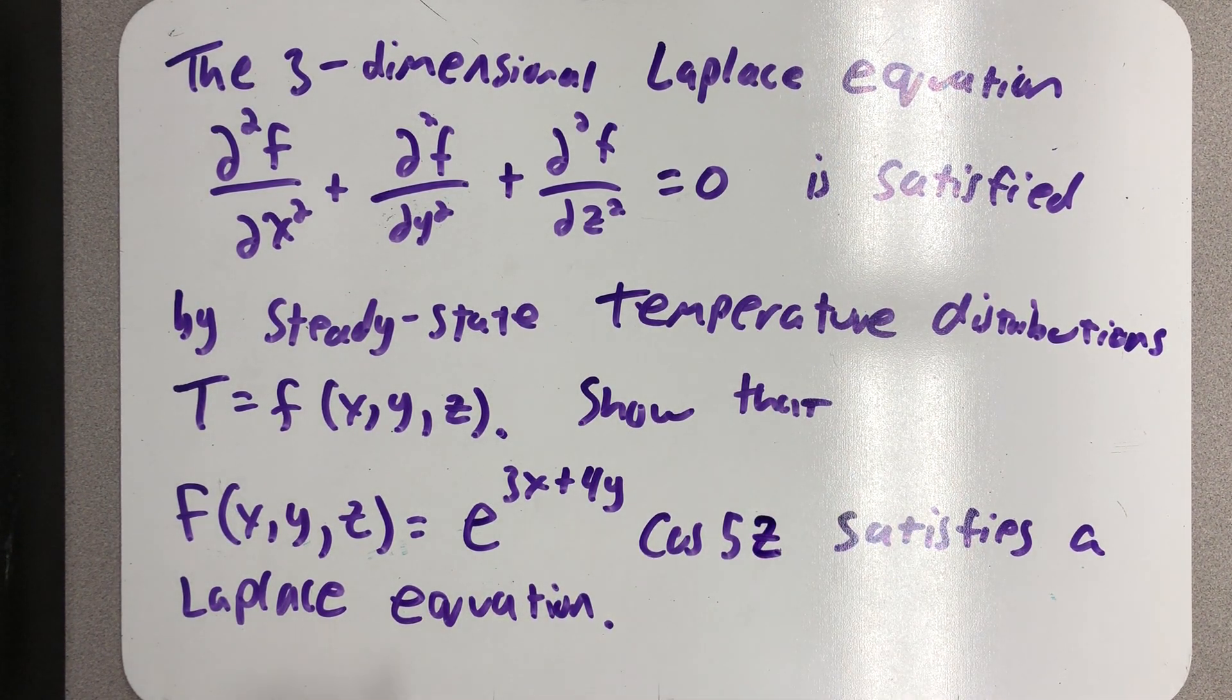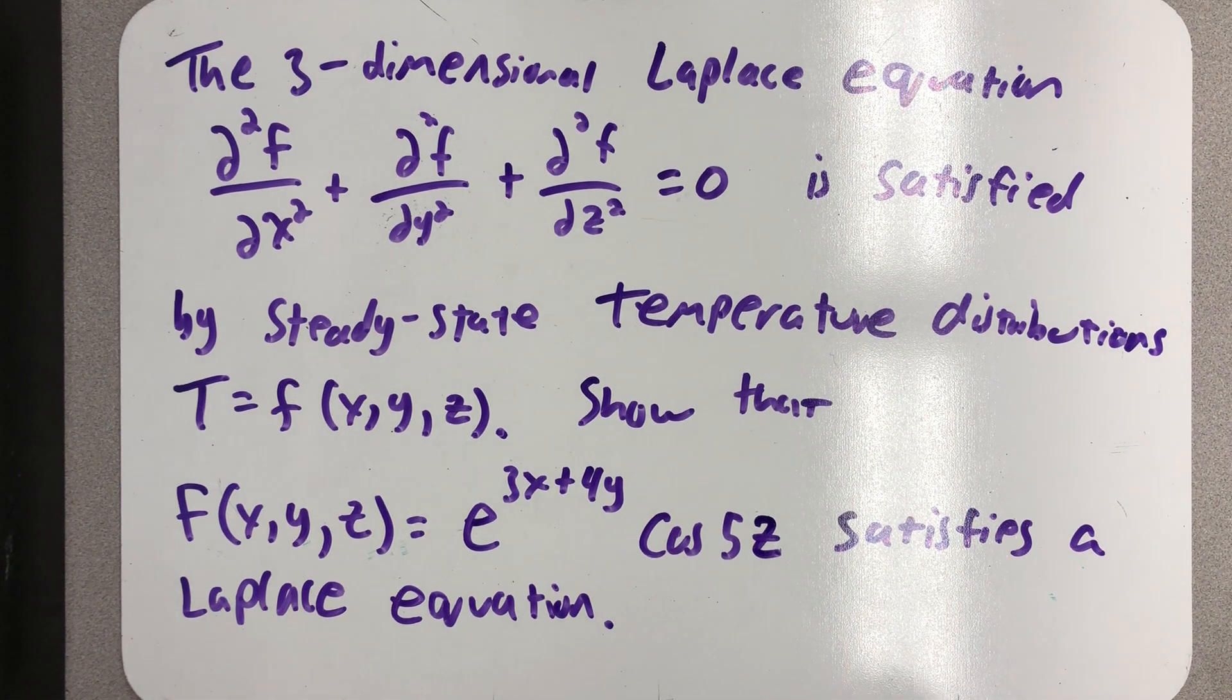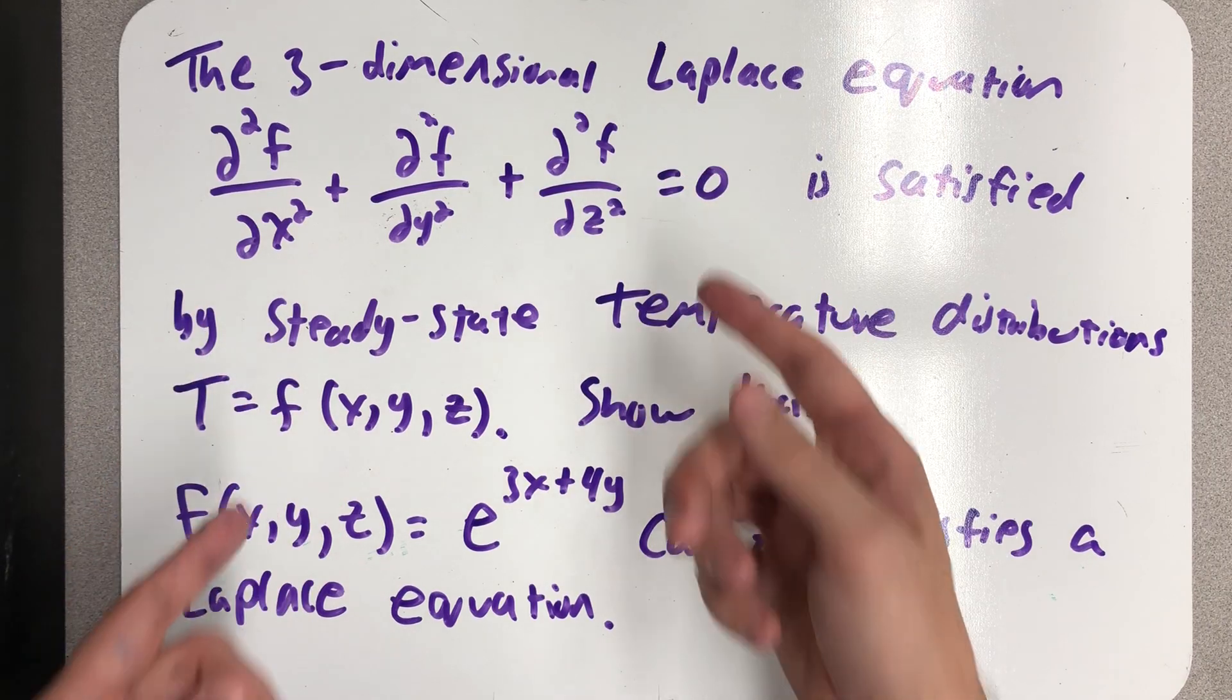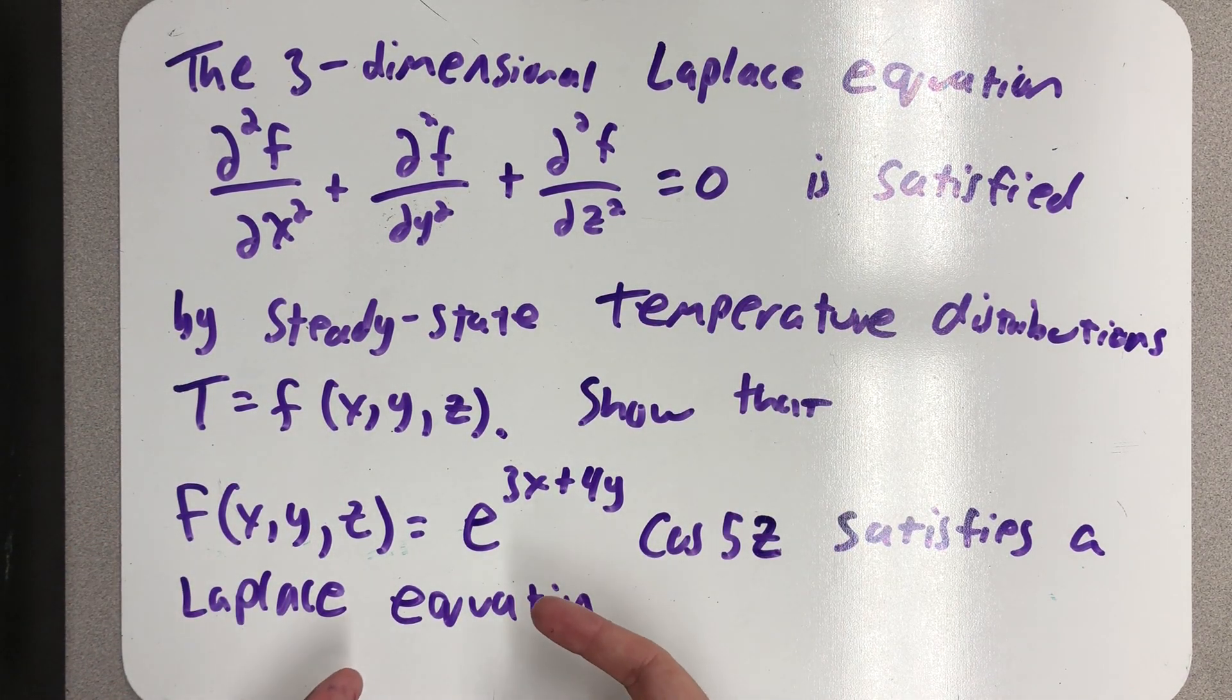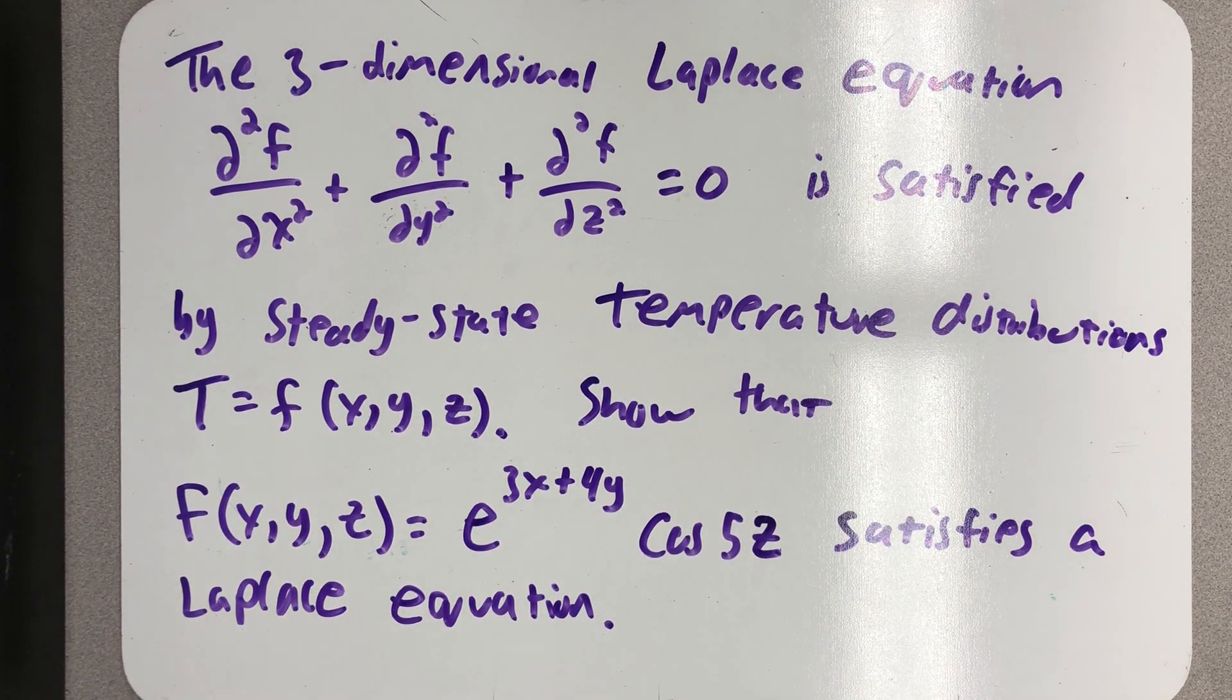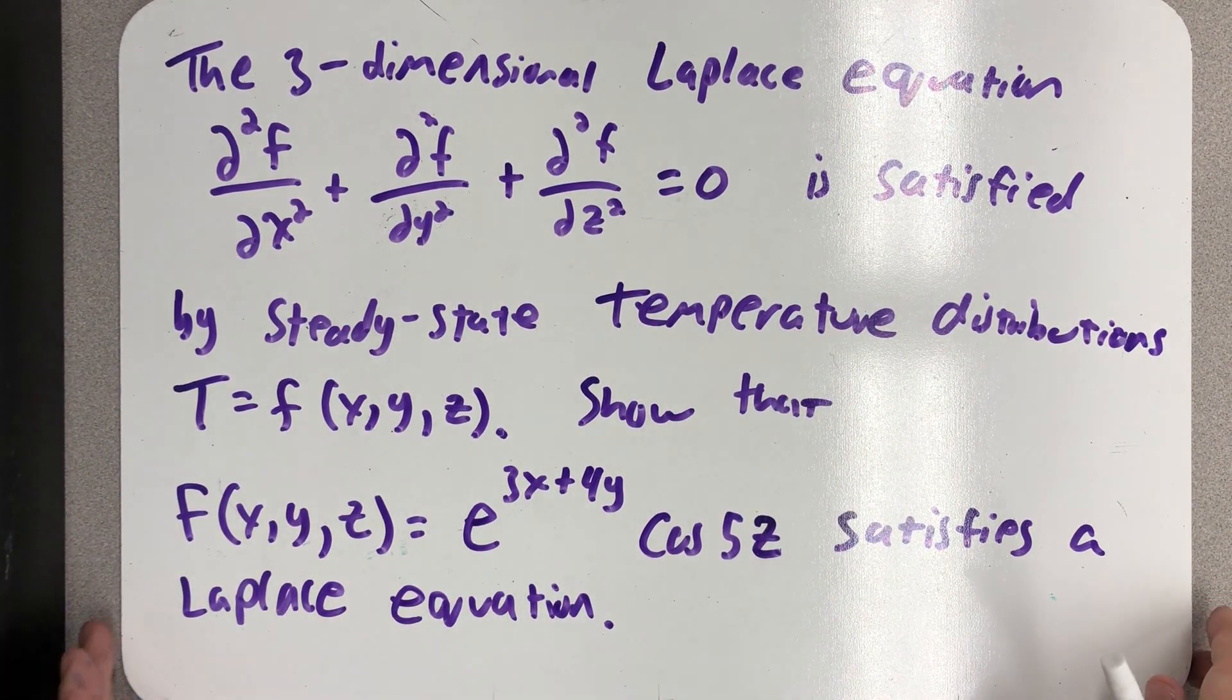Well, this is one of those problems that tells us a whole bunch of stuff. Apparently I'm dealing with temperature distributions—I don't really need to know that. All I need to recognize is that to satisfy the Laplace equation, I have to take all three second partials and make sure those second partials sum to zero. So let's take our function and start by taking first the first partials and then the second partials.